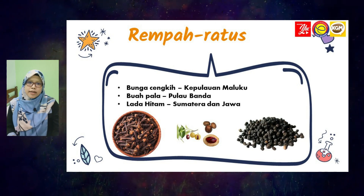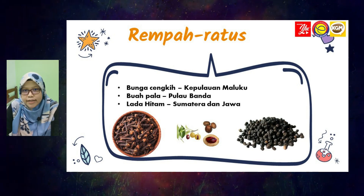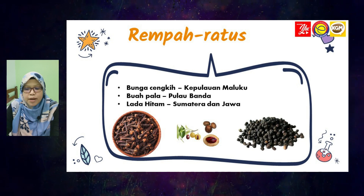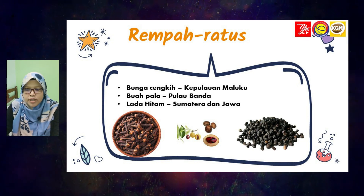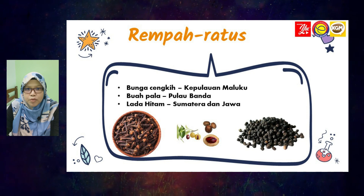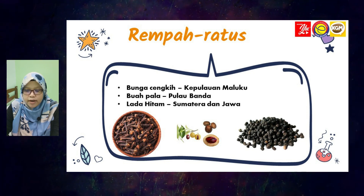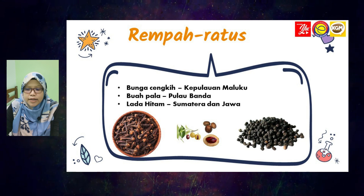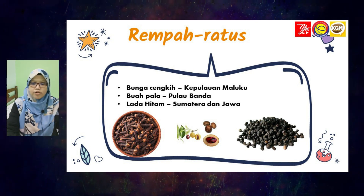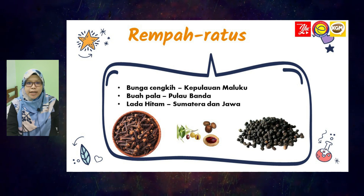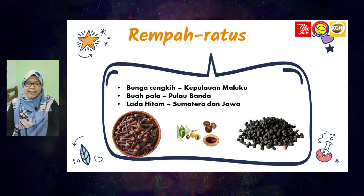Yang seterusnya adalah Rempah Ratus. Ada tiga: yang pertama, bunga cengkih di kawasan Kepulauan Maluku; yang kedua, buah pala di Pulau Banda; dan yang ketiga adalah lada hitam di Sumatera dan Jawa. Cikgu ada tunjuk gambar cengkih, buah pala, dan juga lada hitam.